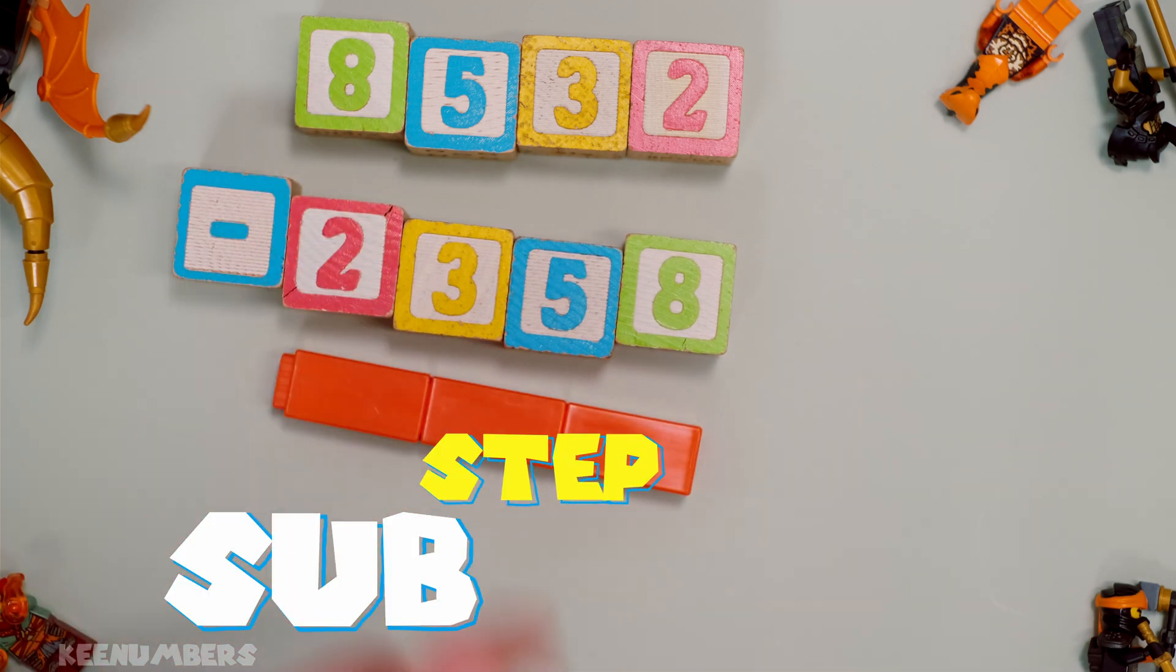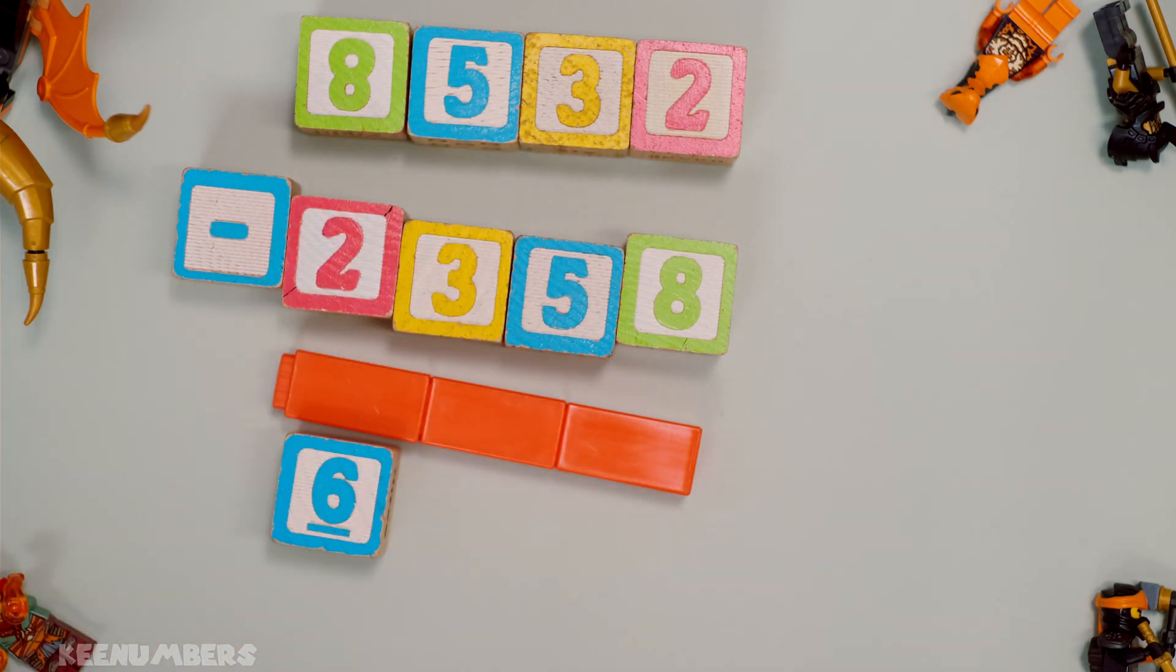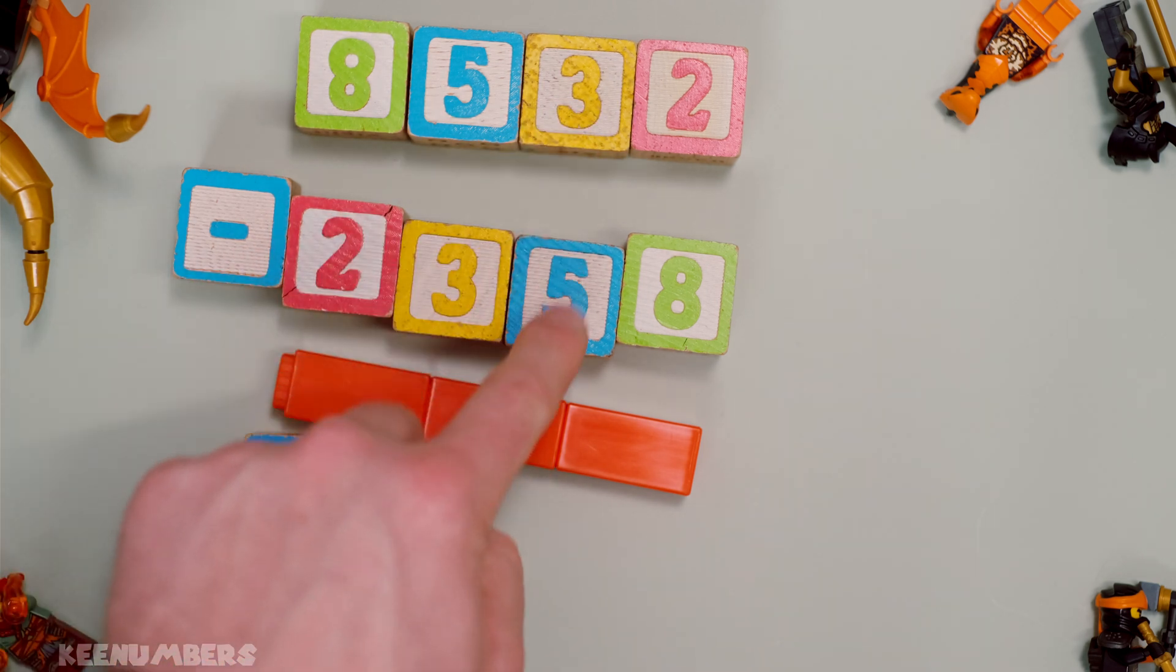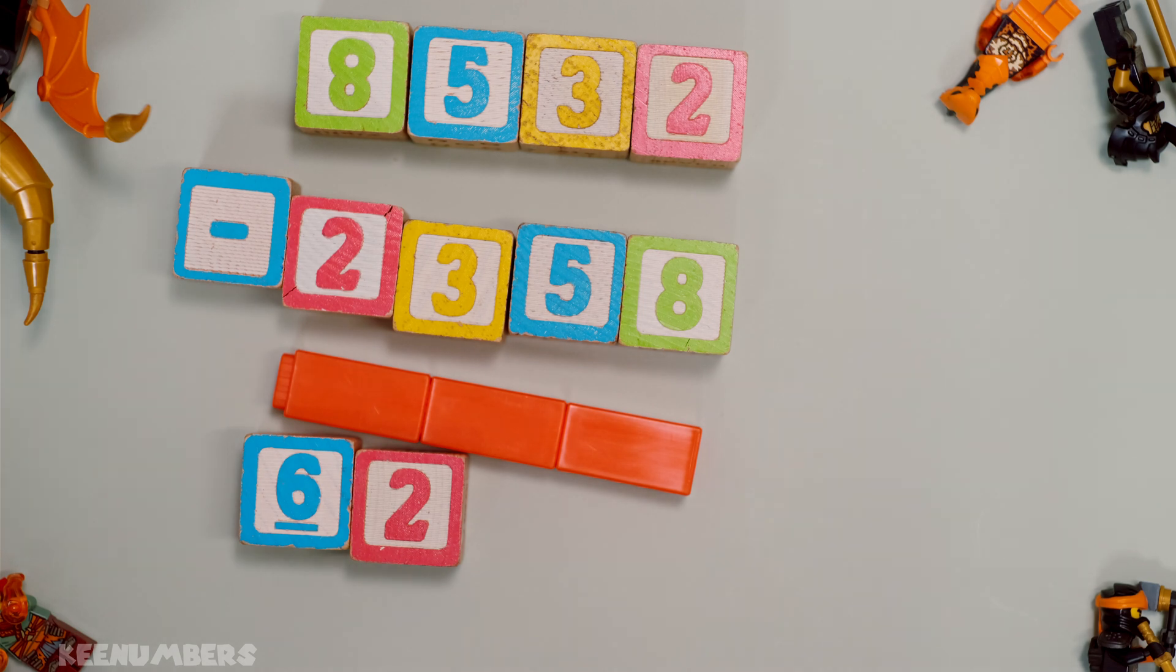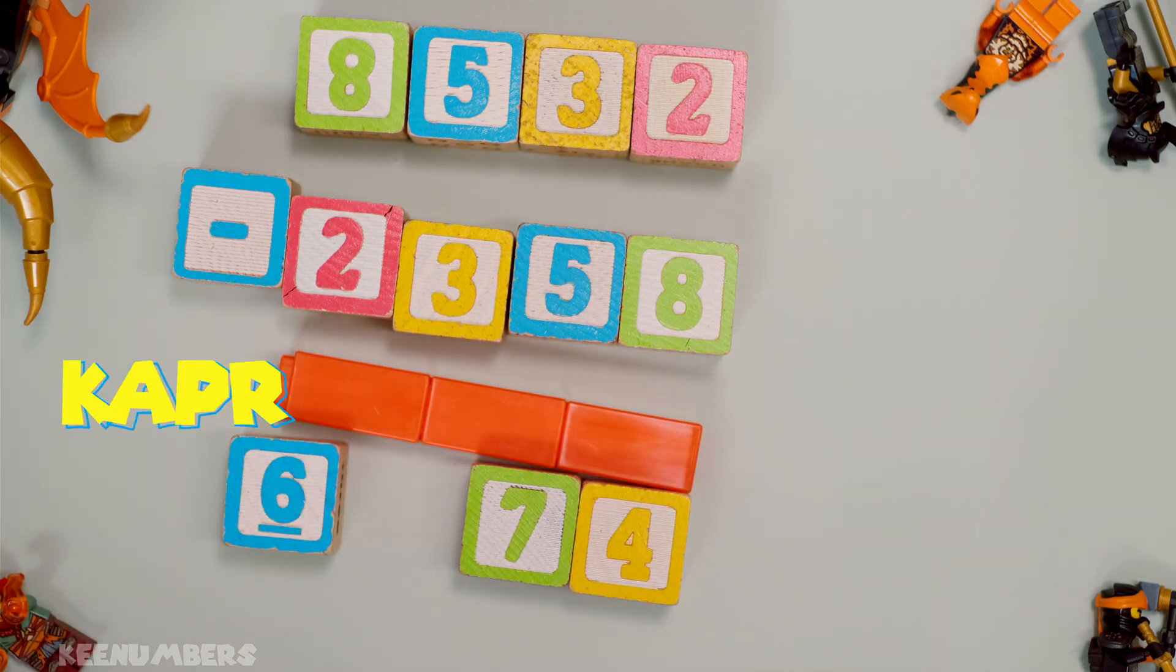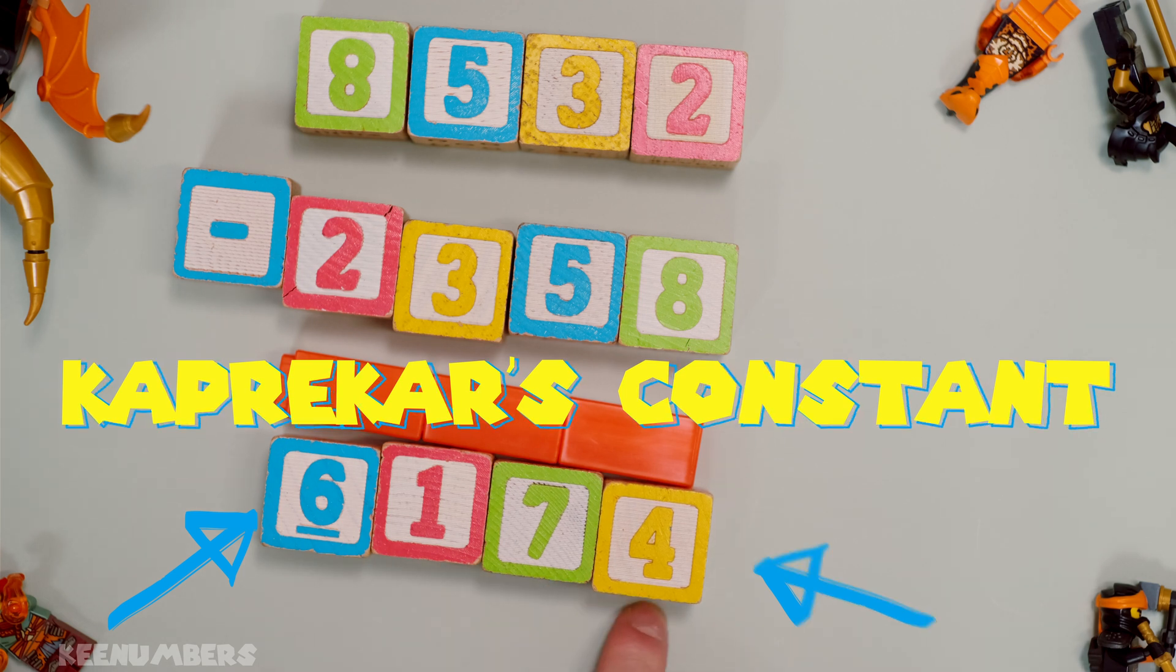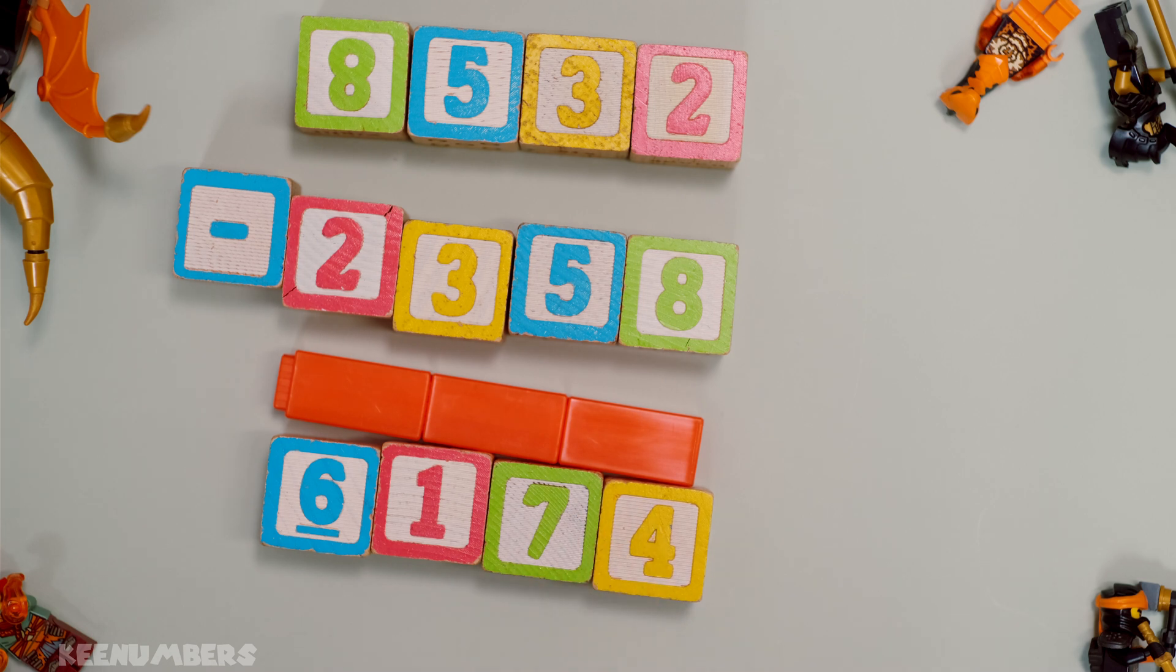Eight minus two, that's going to be good old whopping six. Five minus three, good old whopping two. And then three minus five, that's minus two. Two minus eight, that's minus six. So minus 26, you're really talking about good old 74. And you took that away from the hundreds place, which leaves you with 6,174. Kaprekar's constant. If you do this process enough times, you will always get back to Kaprekar's constant.